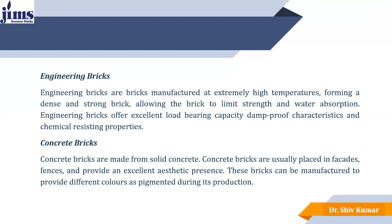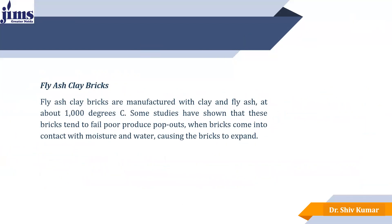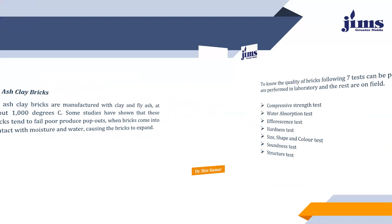Concrete bricks are made from solid concrete. They are used in facets and fences and provide excellent aesthetic appearance. These bricks can be manufactured to provide different colors using pigment during production. Next, fly ash bricks are manufactured with clay and fly ash at about 1000 degrees centigrade. Fly ash bricks can also be made by mixing cement and fly ash together with a proper water-cement ratio, which provides very good strength and can be used in construction work.